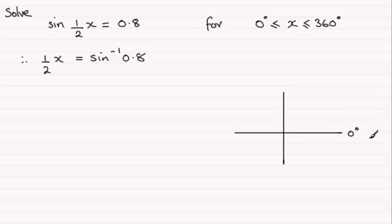Remember this is 0 degrees. We're looking for where the sine is positive. And sine is positive in the first quadrant and in the second quadrant. So draw two lines equally inclined to this horizontal line, and mark in that those two angles there are exactly the same size.